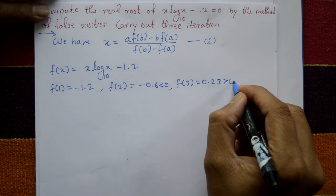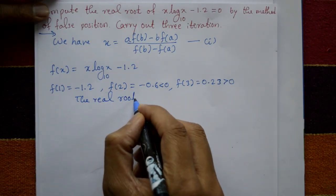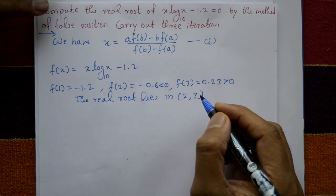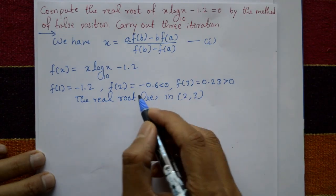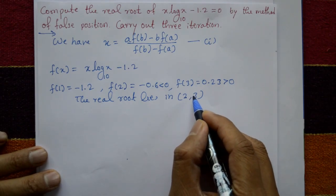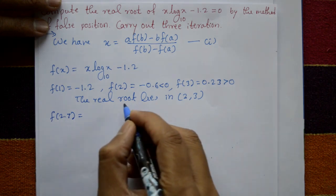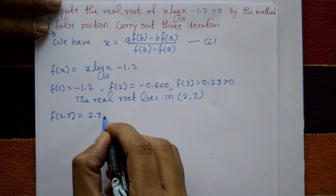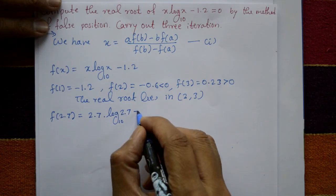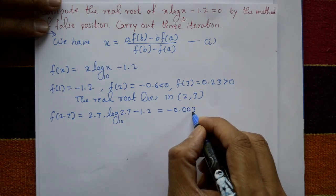Since f(2) < 0 and f(3) > 0, the real root lies between 2 and 3. To narrow further, take increments of 0.1 from 2 to 3. Evaluating f(2.7): 2.7·log₁₀(2.7) - 1.2 = -0.00353.